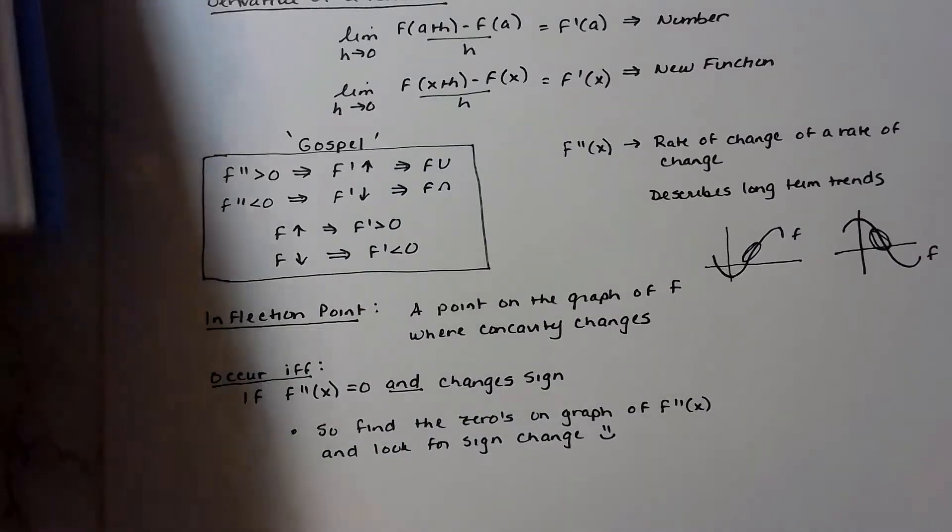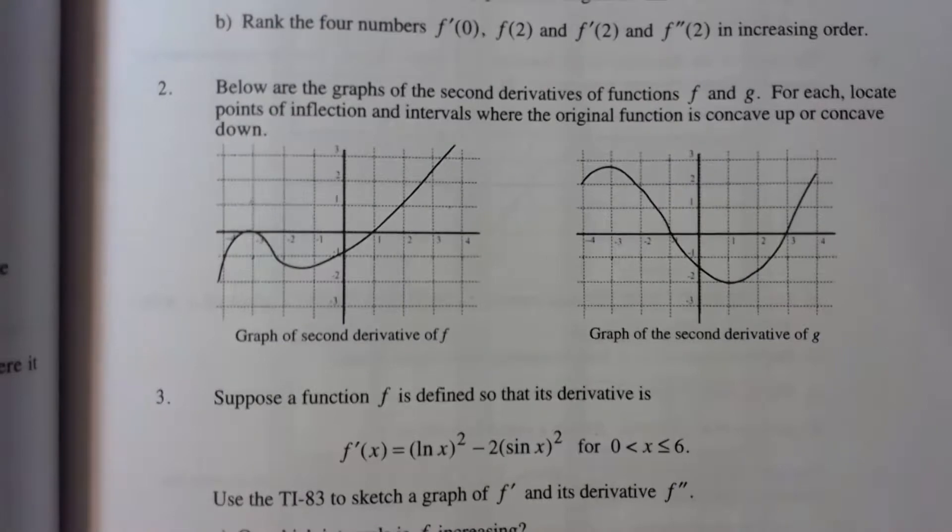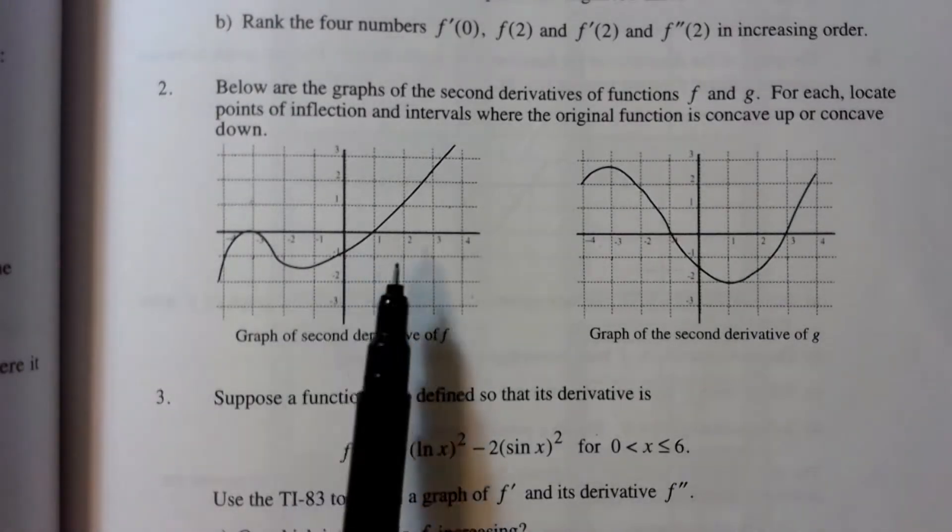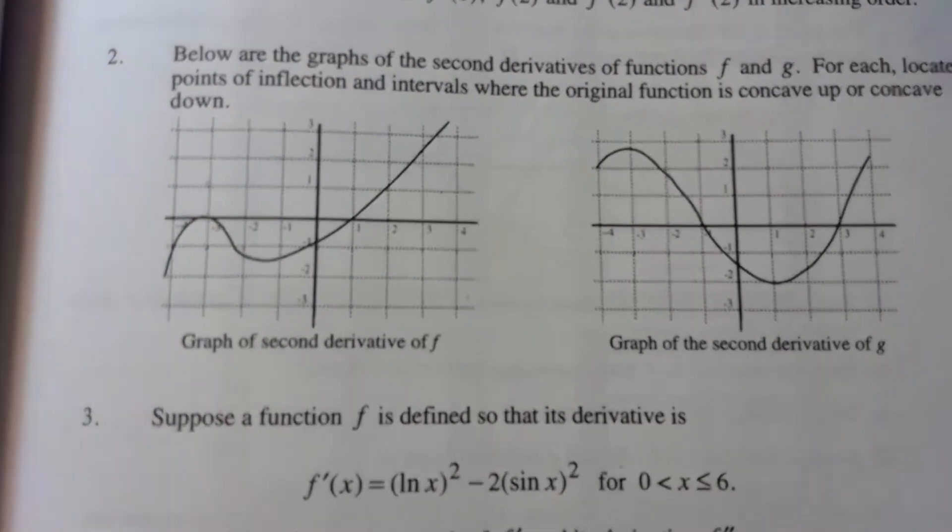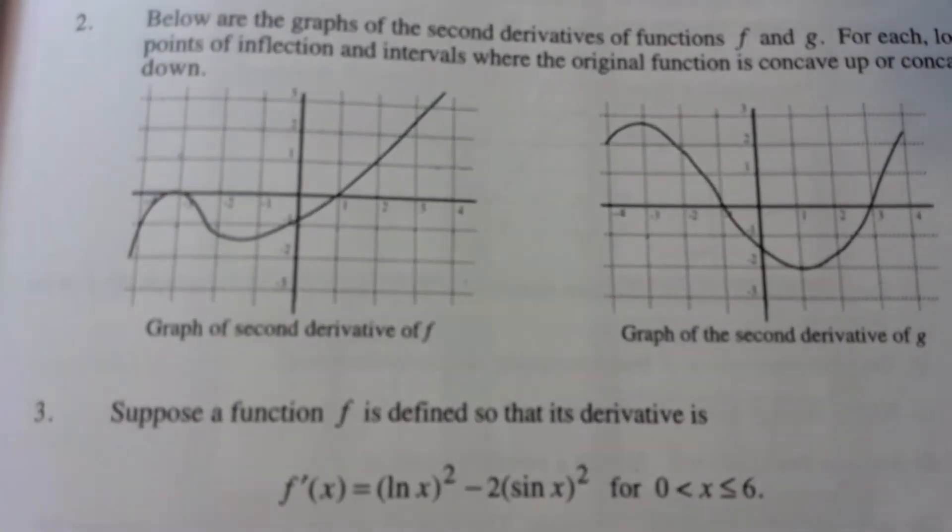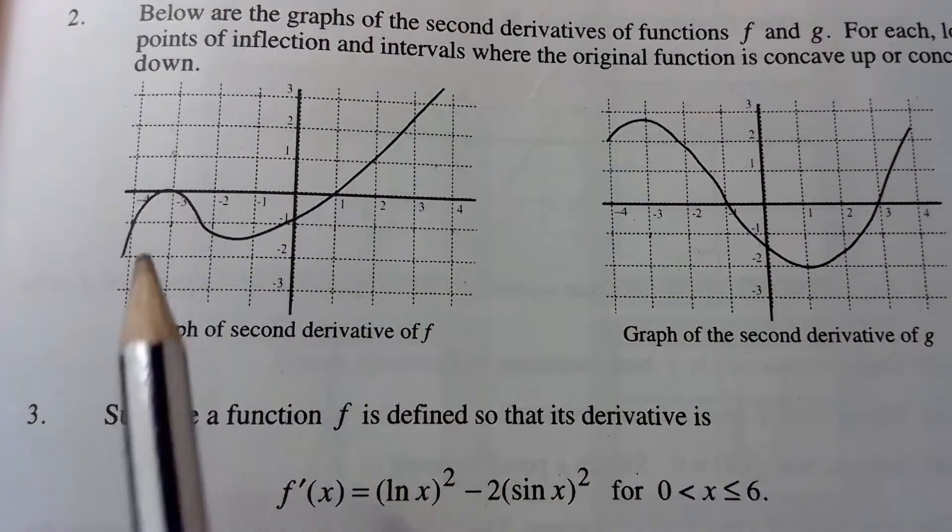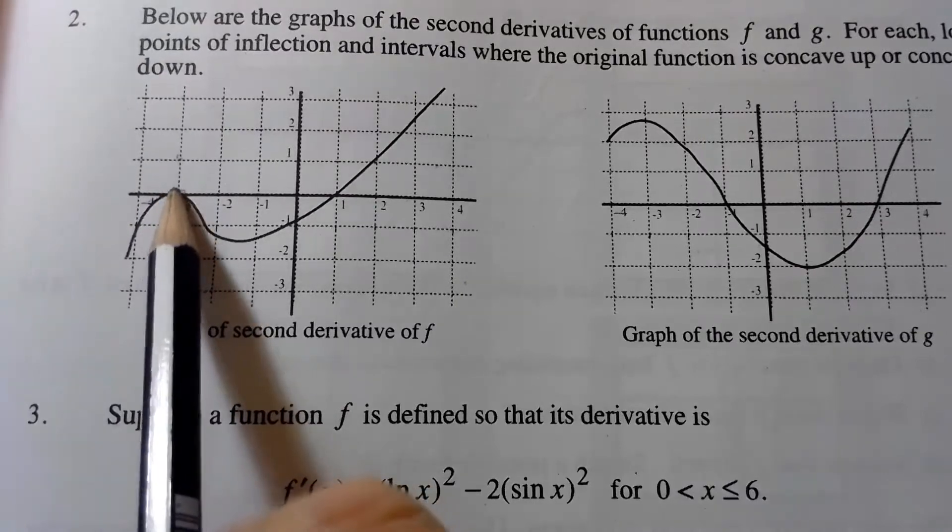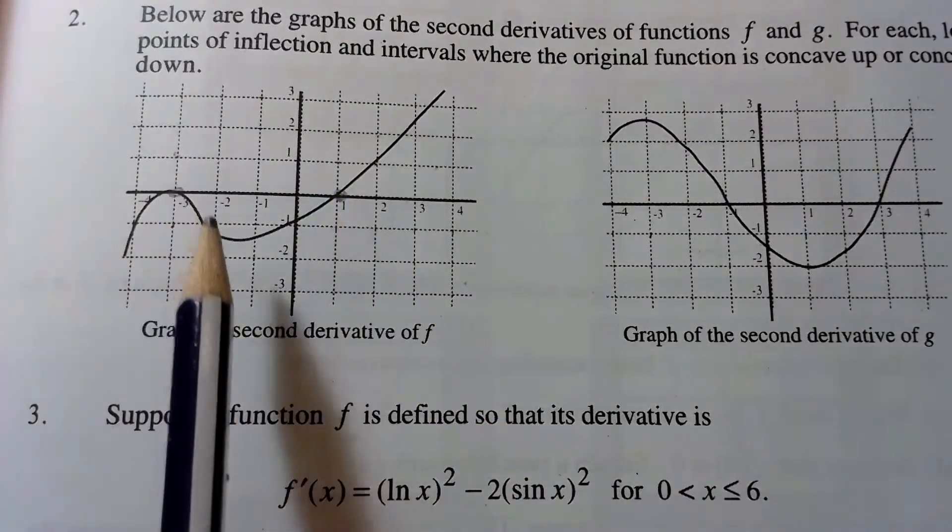I've got your book here, and this is from the homework section on page 125. This is problem number two, just because I want to focus on the graphs here. This graph here is the graph of a second derivative, and what I notice is that I've got a zero here, and I've got another zero here.